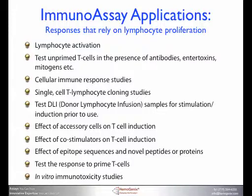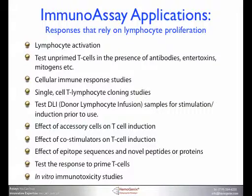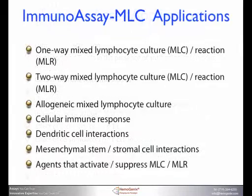ImmunoLight 96, ImmunoFloor 96, and ImmunoGlow 96 can be used for numerous applications that rely on lymphocyte proliferation — for example, lymphocyte activation testing, unprimed T cells in the presence of antibodies, enterotoxins, mitogens, cellular immune response studies, single cell T lymphocyte cloning studies, testing donor lymphocyte infusion samples for co-stimulation or induction prior to use, and looking at the effect of accessory cells on T cell induction and co-stimulators, as well as the effect of epitope sequences and novel peptides or proteins.